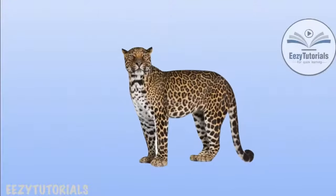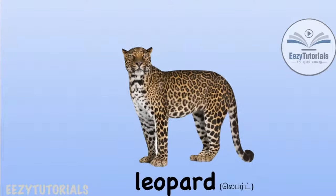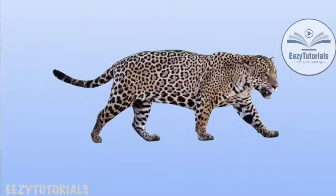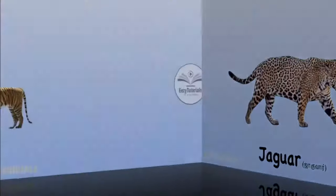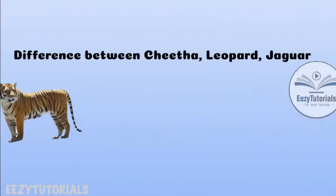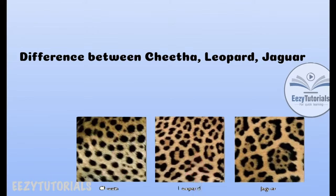This animal has small rosettes — Leopard. And the animal with larger rosettes — Jaguar. We can easily identify a tiger with its stripes. The difference between cheetah, leopard, and jaguar: cheetah has black spots, leopard has small rosettes, and jaguar has large rosettes.